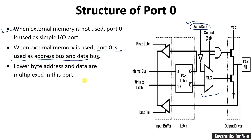Lower order means A7 to A0, and data lines are D7 to D0, meaning there are a total of 8 data lines. There are a total of 16 address lines, out of which port 0 is used for the lower byte of the address bus.